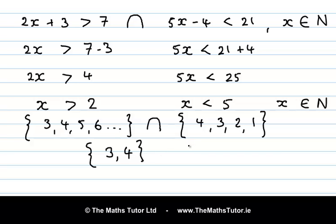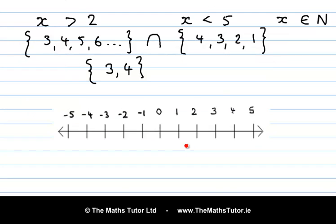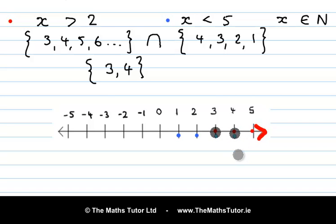We could also plot the solution sets for each and find the intersection. Let's plot the first set in red: x is greater than 2 and it's a natural number, so 3, 4, 5 and so on. Now let's plot the second set in blue: x is less than 5, so 4, 3, 2, 1. Zero and minus 1 don't count because x is an element of the natural numbers. Now let's highlight where they intersect — they intersect at 3 and at 4. So the intersection is {3, 4}, the same as what we figured out earlier.